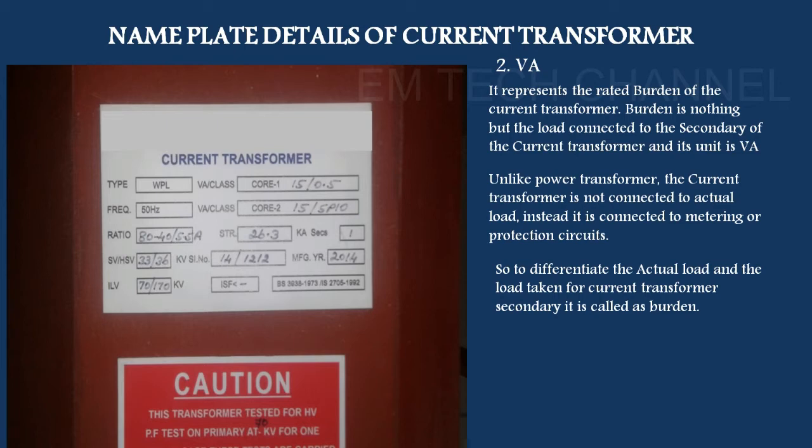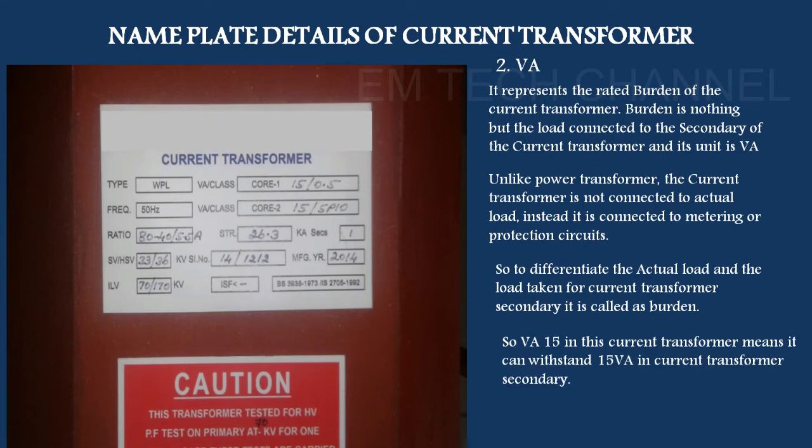If we have a unit of VA, and the CT secondary is 1A, then if we have wire going from the CT secondary to the meter and a relay connected, that is the burden. For example, if we have a burden of VA 15, the rated burden is 15 VA.